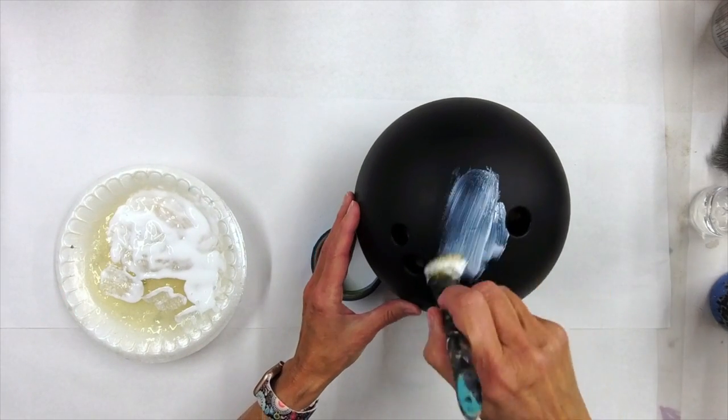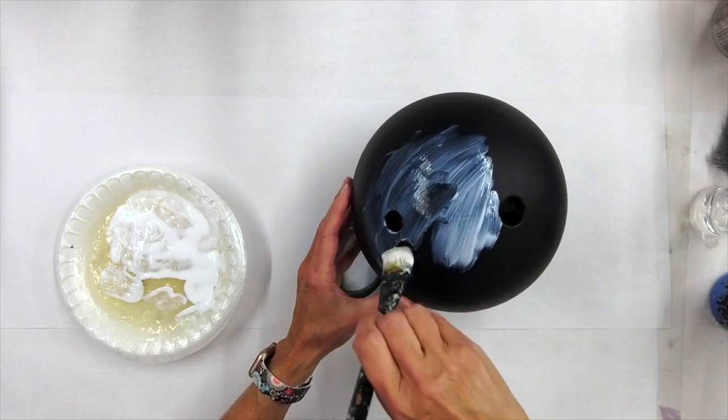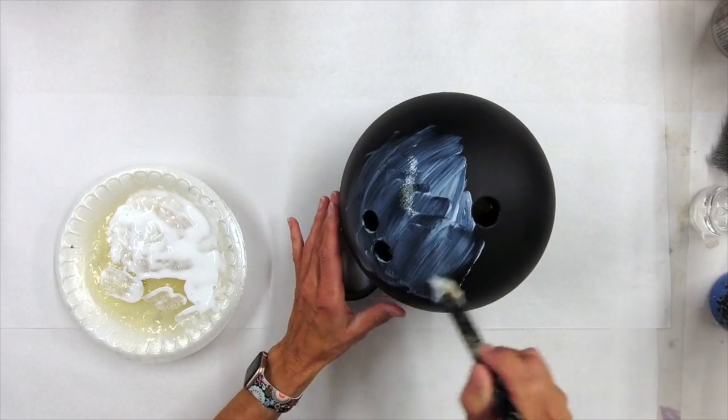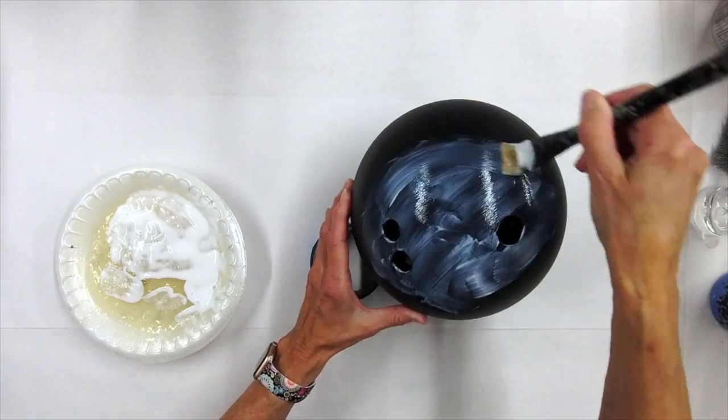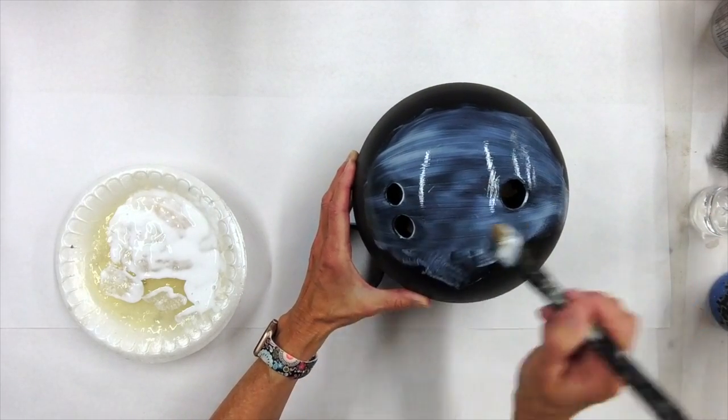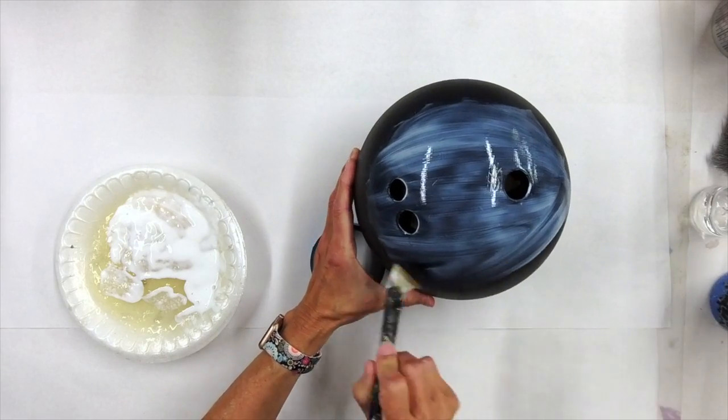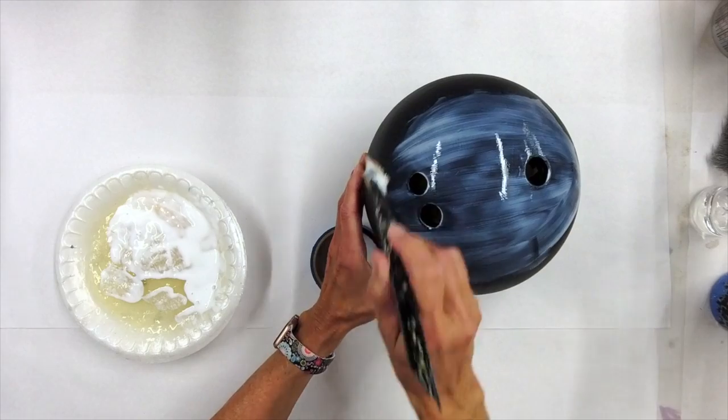Foil adhesive does not self level. So that means any brush stroke you leave behind could possibly be seen in the transfer. So as I said, we're working on something that's pretty smooth. I'm going to try and smooth out my application marks the best I can.